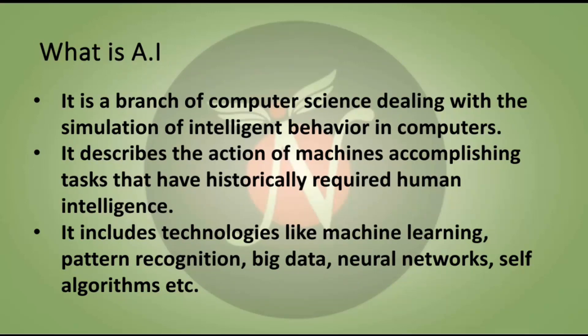Artificial intelligence is a branch of computer science that deals with the simulation of intelligent behavior in computers. It describes machines accomplishing tasks that have historically required human intelligence. It includes technologies like machine learning, speech recognition, big data, neural networks, and self-learning algorithms. Alexa and Siri are also examples of artificial intelligence.